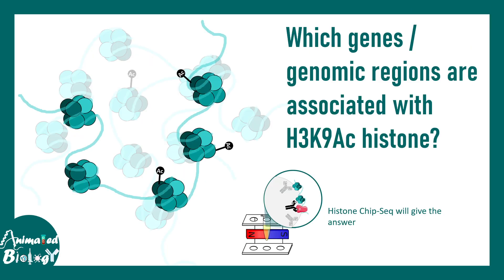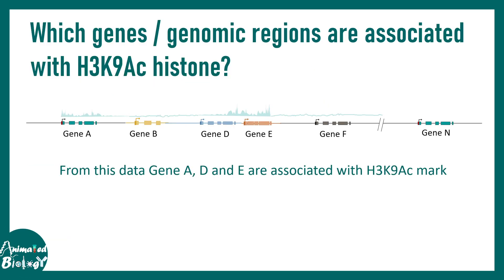Now let's come back to our own example. We ask which genes or genomic regions are associated with histone H3K9 acetylation. In the genomic track there are different genes like gene A, B, C, D, E, F to gene N. You can see from this dataset that the peaks give us an idea of where this particular histone modification was found and in which genomic location. From this data you can see that ChIP peaks are found in gene A, D and E. So gene A, D and E are associated with the H3K9 mark.